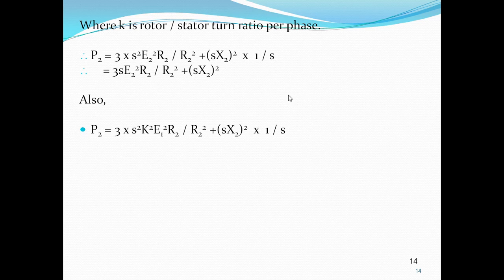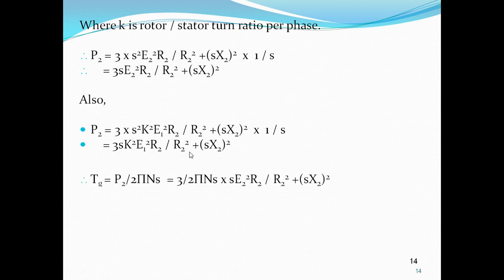Also, P2 = 3·S²·K²·E²·R2 / (R2² + (S·X2)²) × (1/S), which gives P2 = 3·K²·E²·R2 / (R2² + (S·X2)²). Therefore Tg = P2 / (2πNS).